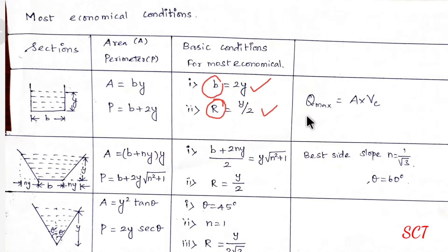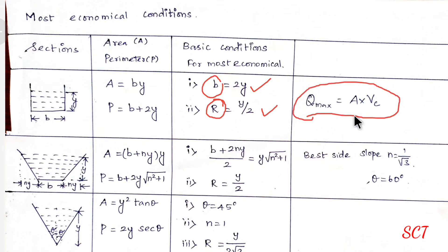Now, maximum discharge. This applies to mostly all sections. Q max equal to area into critical velocity.